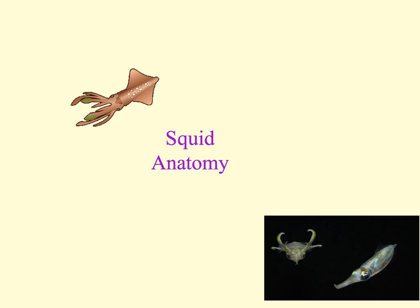In this video we will be covering the anatomy of the squid. The squid belongs to the kingdom Animalia, phylum Mollusca. The phylum Mollusca is a large group of invertebrate animals that vary in size, shape, and appearance. The diversity of the animals in phylum Mollusca is one of the features that makes this group so interesting.